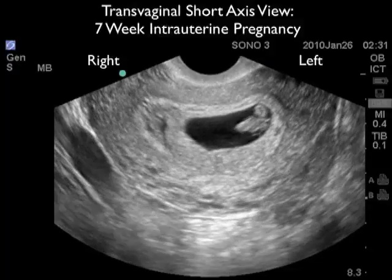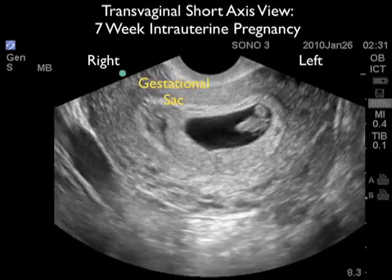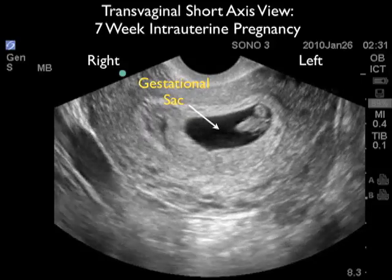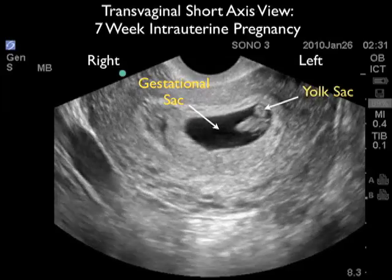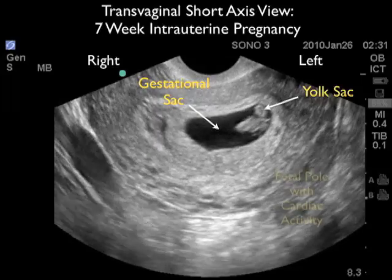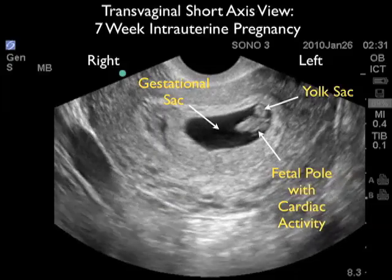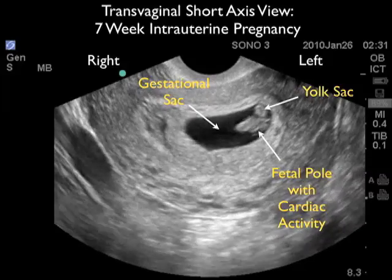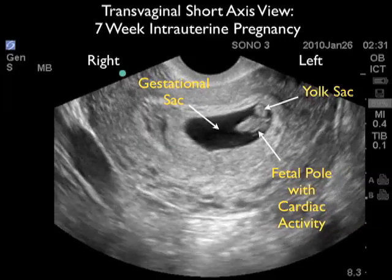Here's a transvaginal short axis view of a 7-week intrauterine pregnancy. The gestational sac is located in the center of the uterus, and there's a good amount of myometrial mantle surrounding the gestational sac, signifying a fundal location. We see the positive cheerio sign, or yolk sac, to the upper right aspect of the gestational sac, and just below we see the fetal pole stretched out. Notice the positive cardiac activity as we scan back and forth through the fetal pole.